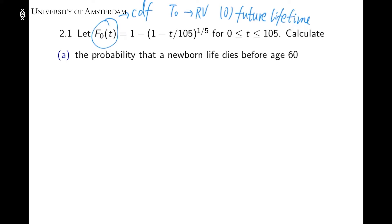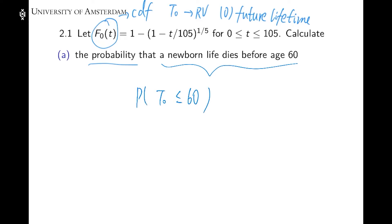Now given those concepts, in Part A we are going to calculate the probability that a newborn dies before age 60. The equivalent event is that the future lifetime of this newborn is less than or equal to 60. Writing this in terms of the random variable, this is exactly the definition of CDF, which is F0(60).